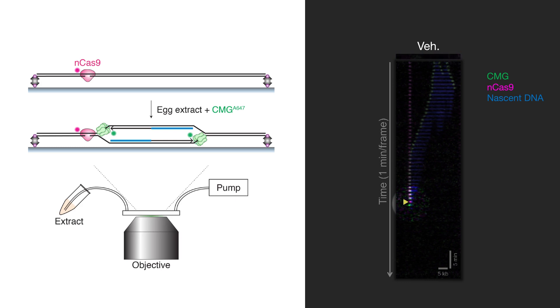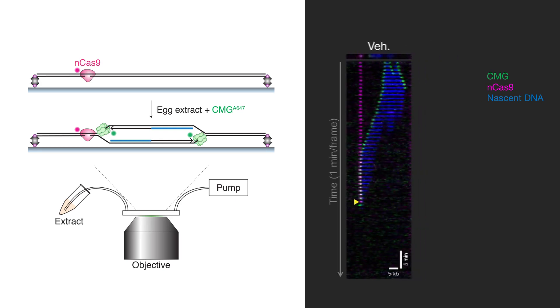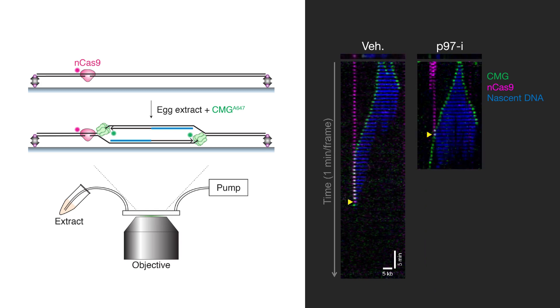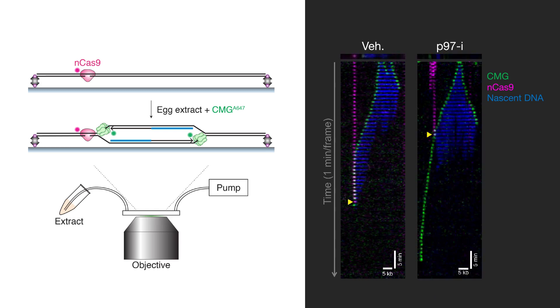He could show that this dissociation is actually an active process because if he adds an inhibitor of the p97 ATPase that normally extracts ubiquitylated proteins from their local environment, he found that CMG was not extracted and that it continued translocating along the DNA.